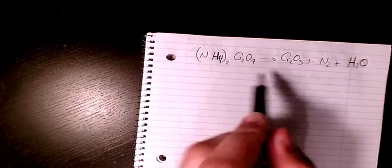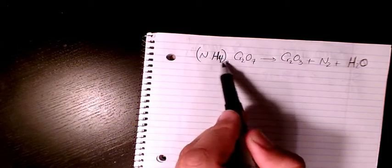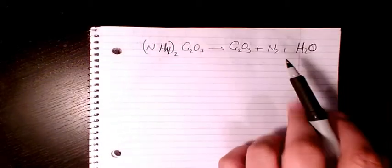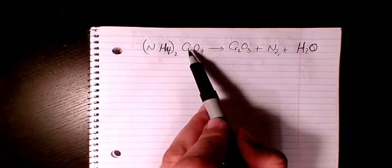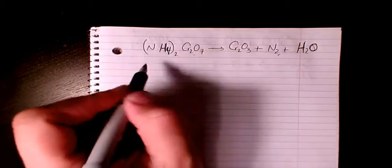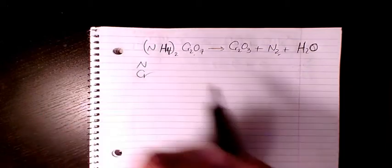So I start with nitrogen. We have two in here and we have two on the product side. Chromium we have two and two so that's balanced as well. So nitrogen is balanced, chromium is balanced.